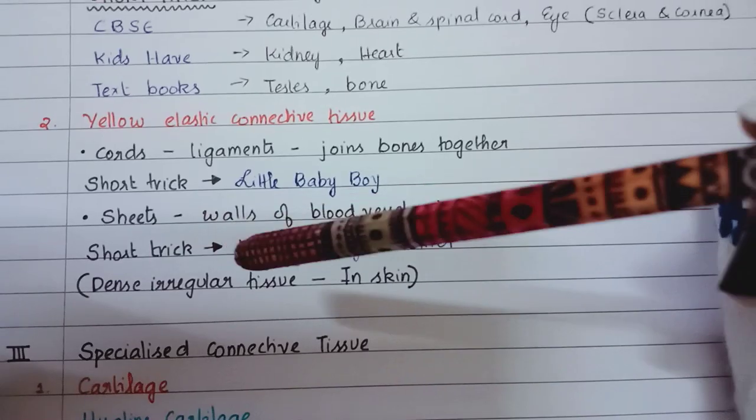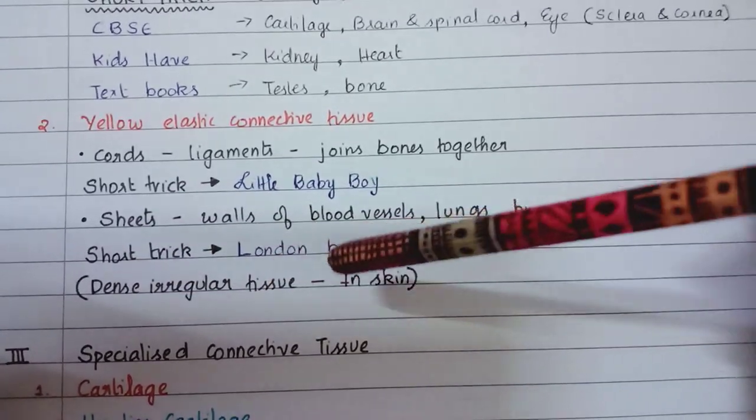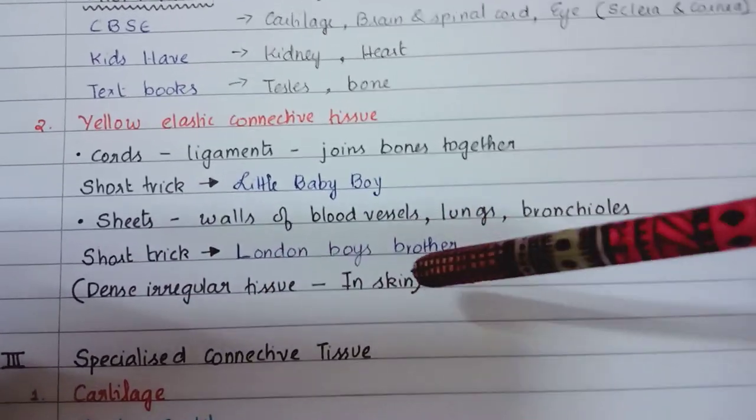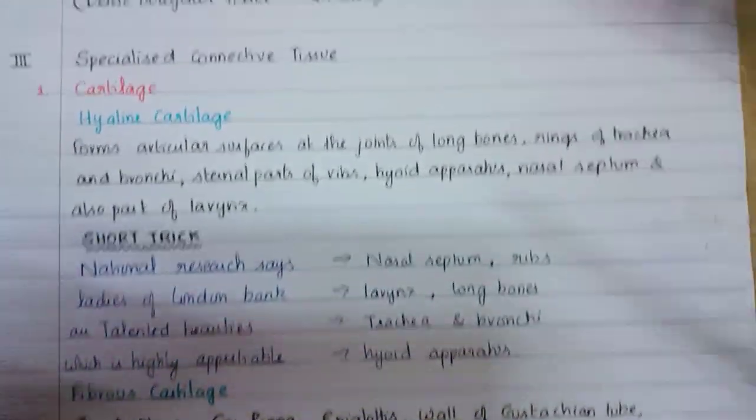Dense irregular tissue is found in skin. That's all for dense irregular tissue.